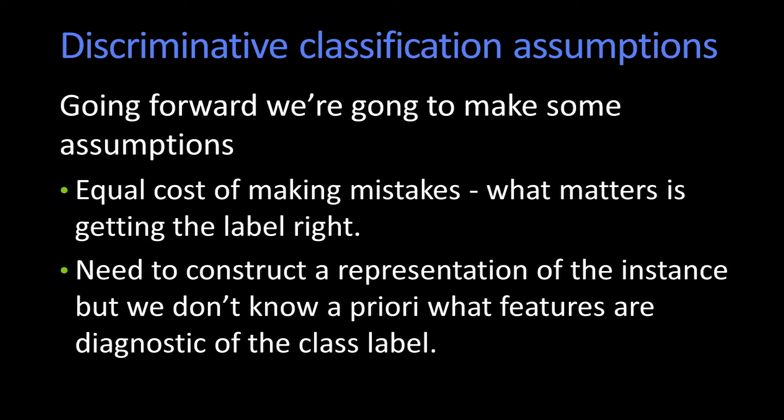The other assumption — and this is actually good because it's true — is that we need to build a representation of each instance. We're going to build a description, but we don't know a priori what features actually matter. So we're going to write down a whole bunch of things about each instance, and then train a discriminative classifier to make the classification. It'll have to figure out where the information is in the features.